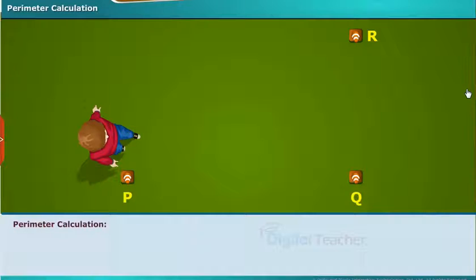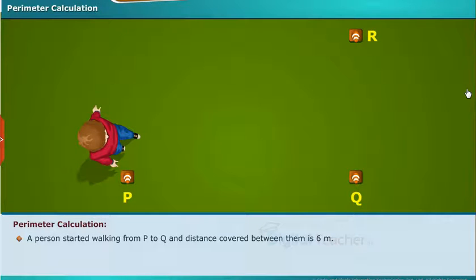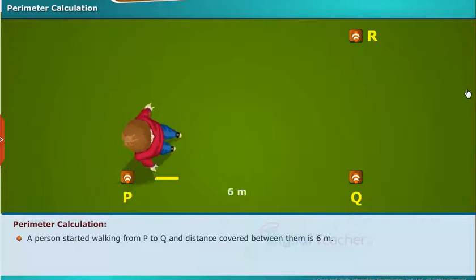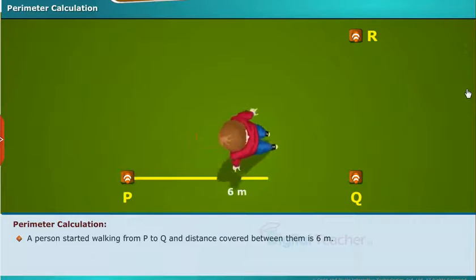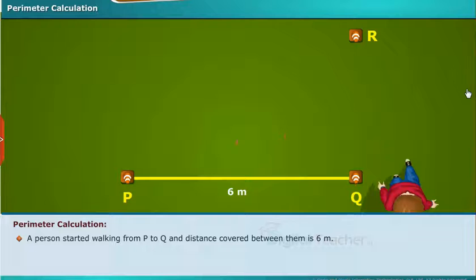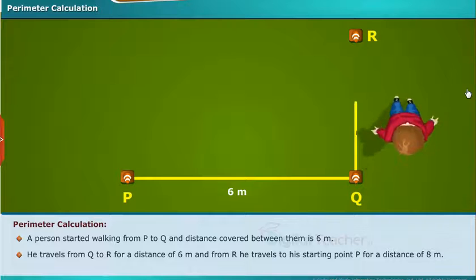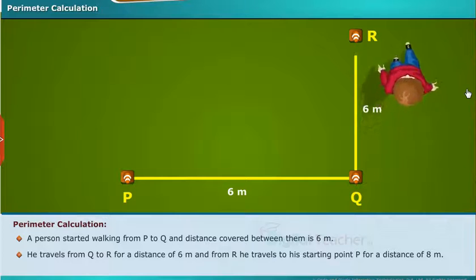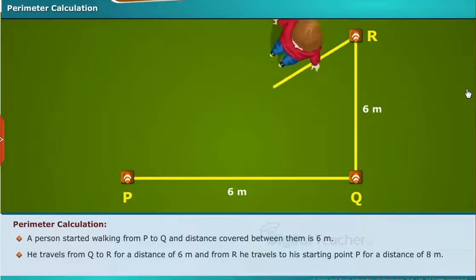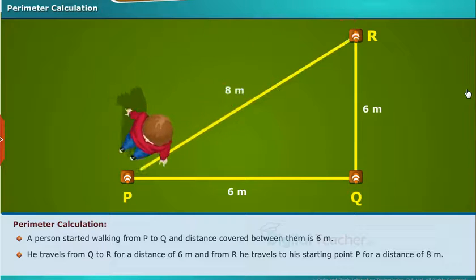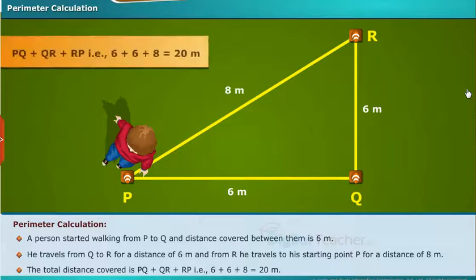Now, we will learn how to calculate the perimeter. A person started walking from P to Q and distance covered between them is 6 meters. He travels from Q to R for a distance of 6 meters, and from R he travels to his starting point P for a distance of 8 meters. The total distance covered is PQ plus QR plus RP, that is 6 plus 6 plus 8 equal to 20 meters.